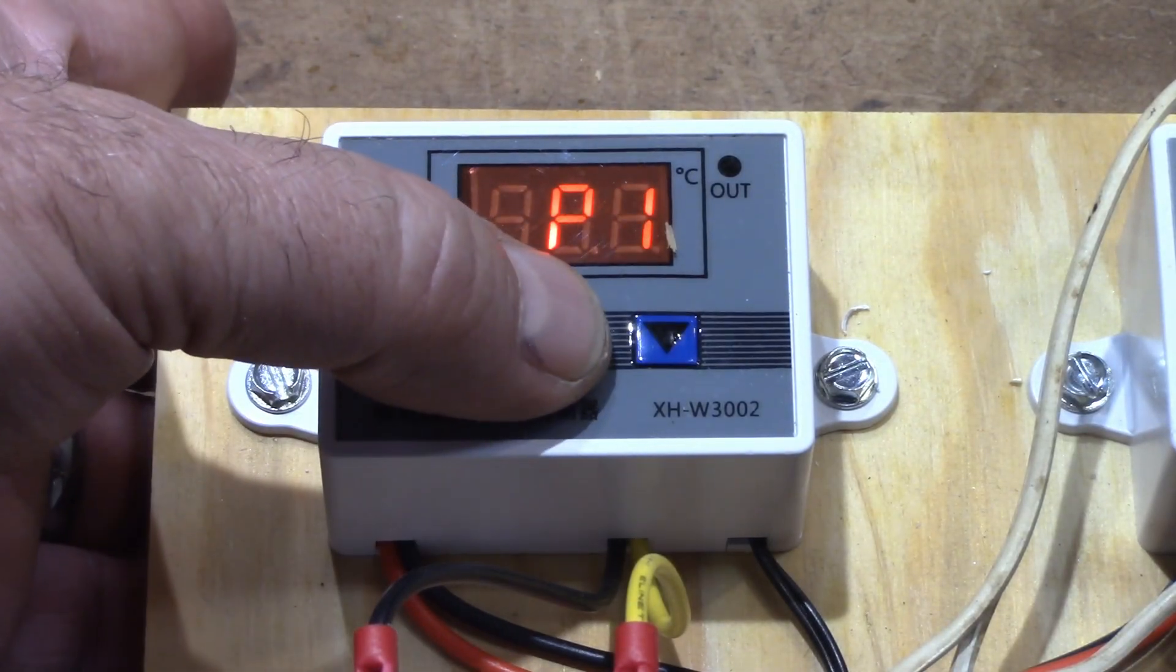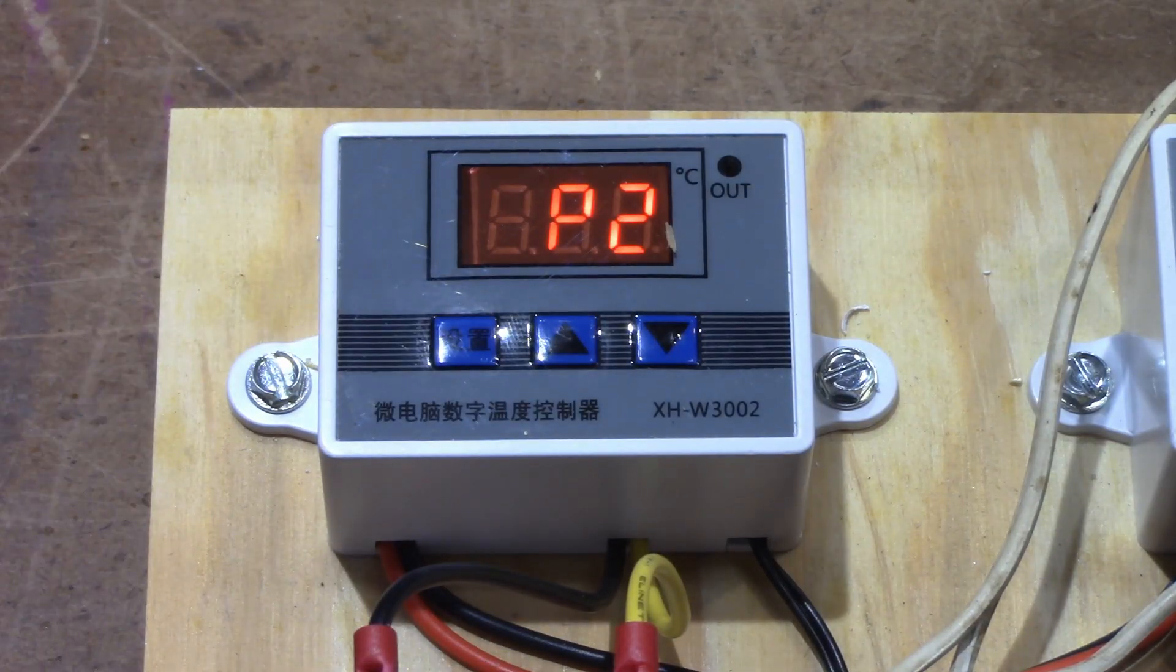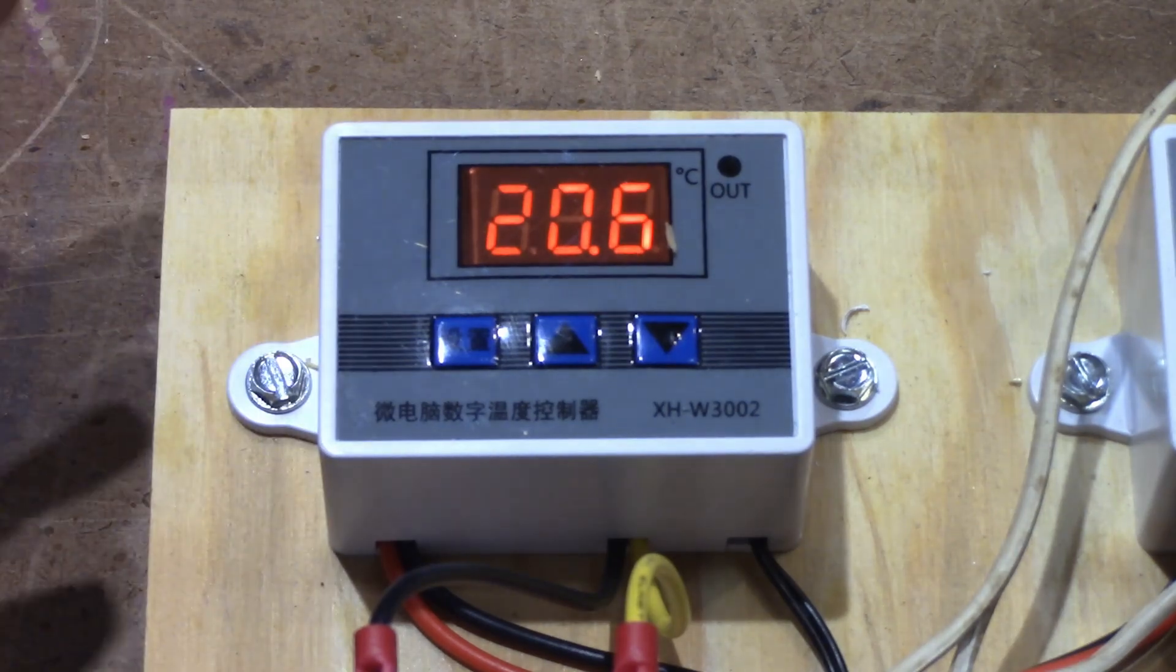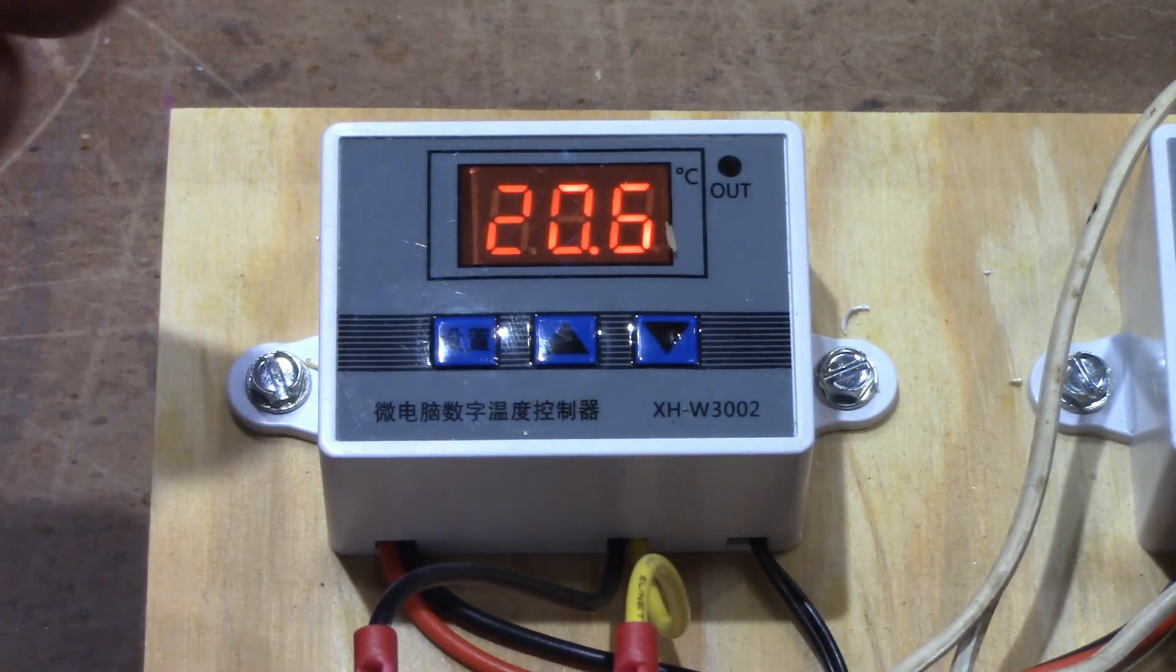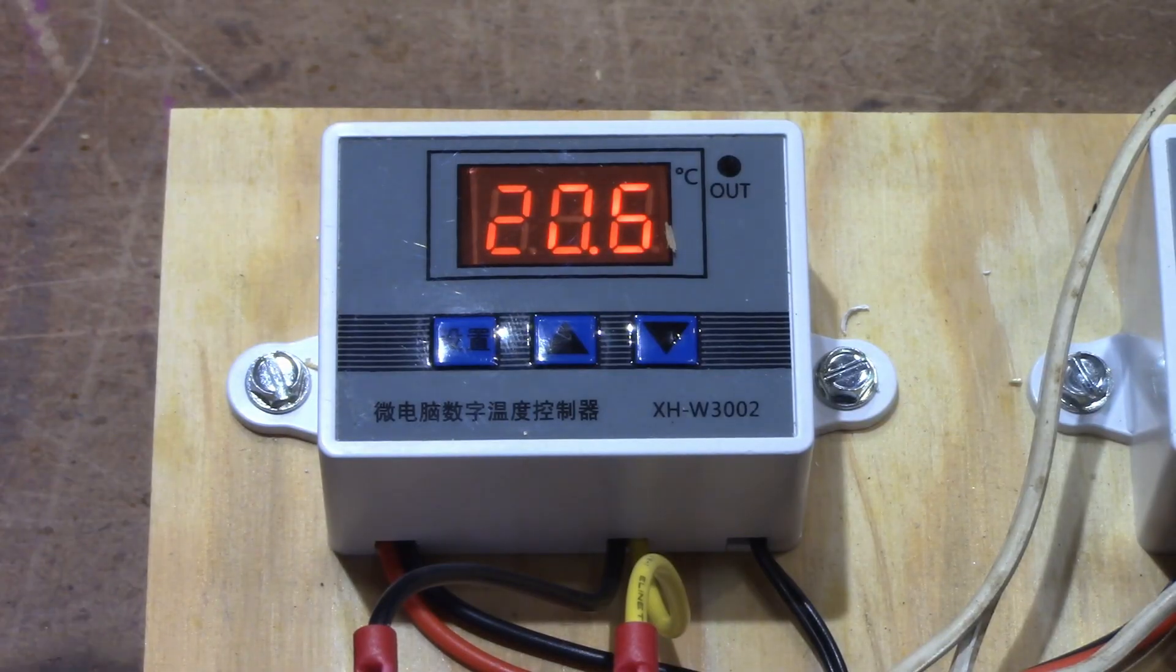Now there's also P1 and P2. That's if you've got some type of offset that you need to do on the temperature in case it's not reading properly. Say this says it's 10 degrees and you put a thermometer in there and it's actually 12 degrees, then you can offset the temperature a little bit.